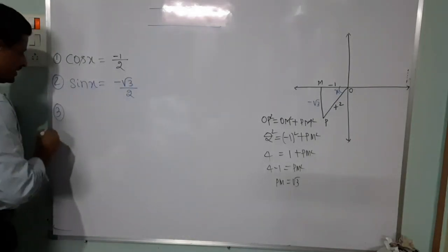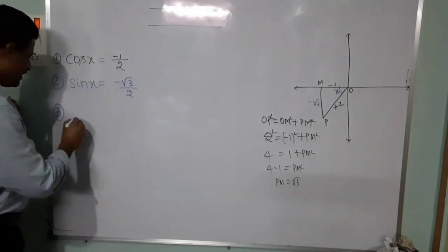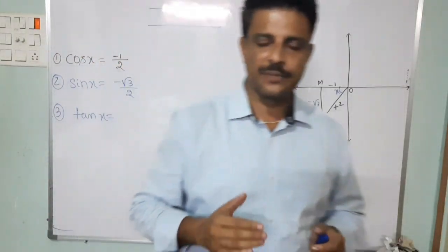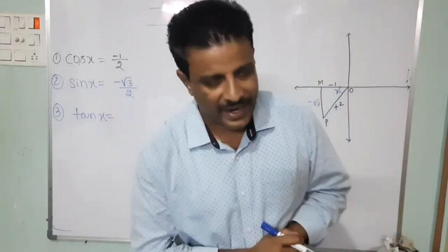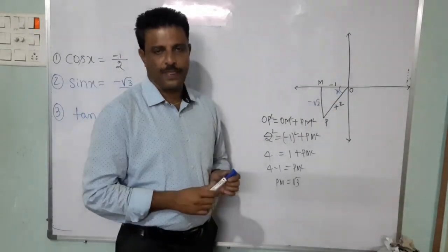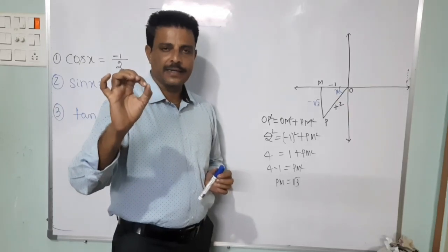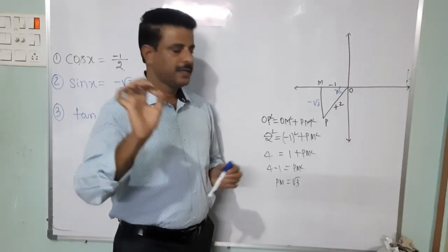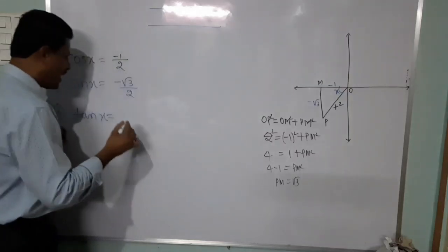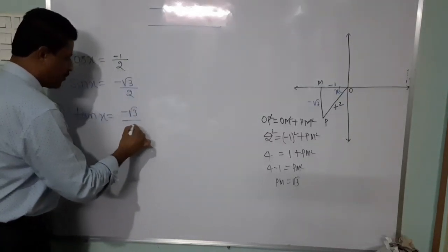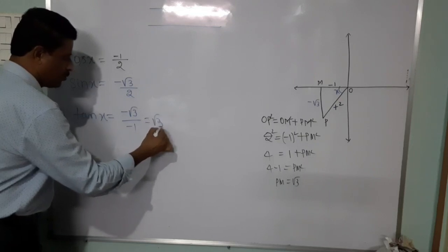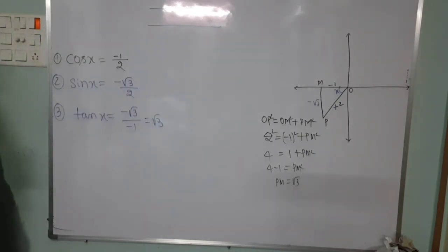Trigonometric ratio number 3: tan x. We know tan x equals opposite by adjacent. The opposite value is minus root 3, and the adjacent value is minus 1. So tan x equals minus root 3 divided by minus 1, which equals root 3.